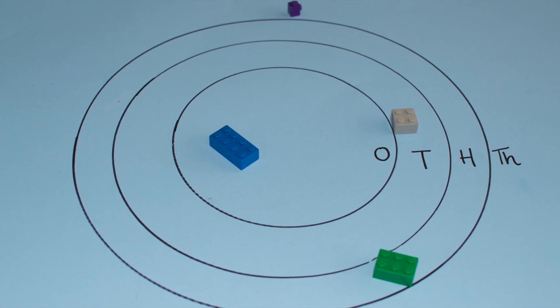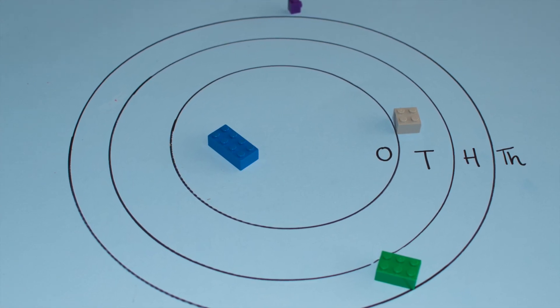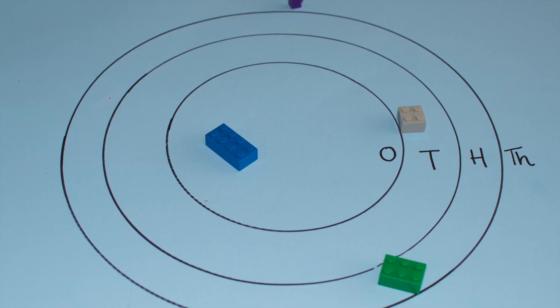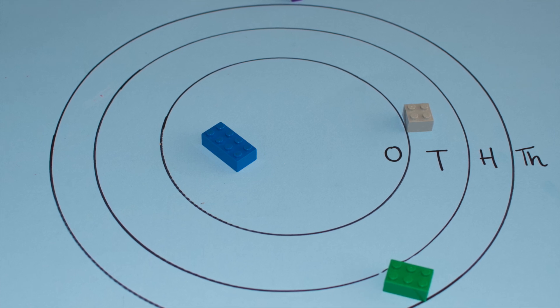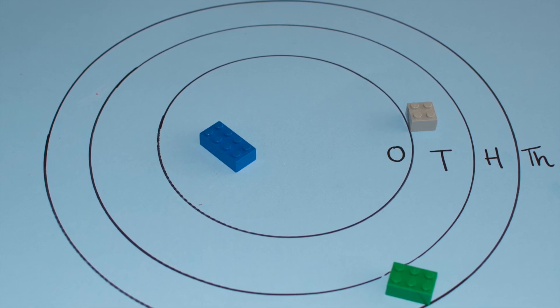So as you can see, there is one stud in the thousands, six studs in the hundreds, four studs in the tens, and eight studs in the ones. The number I have made is 1,648.